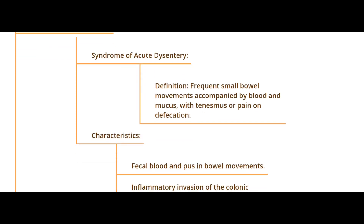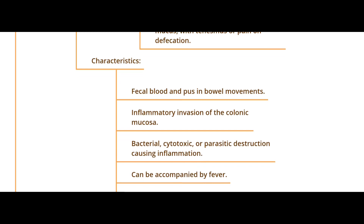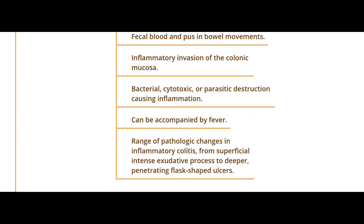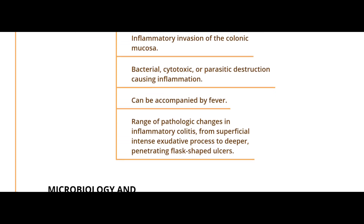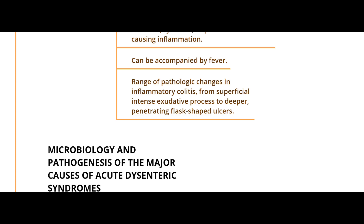To clarify this terminology: if a patient has dysentery it means they have blood or pus in their stool or severe pain during defecation. The characteristics of acute dysentery include fecal blood or pus in bowel movements and inflammatory invasion of the mucosa. This invasion causes fever — not only from intoxication, but from the bacterial cytotoxic or parasitic destruction — which leads to inflammation and then a toxic syndrome.